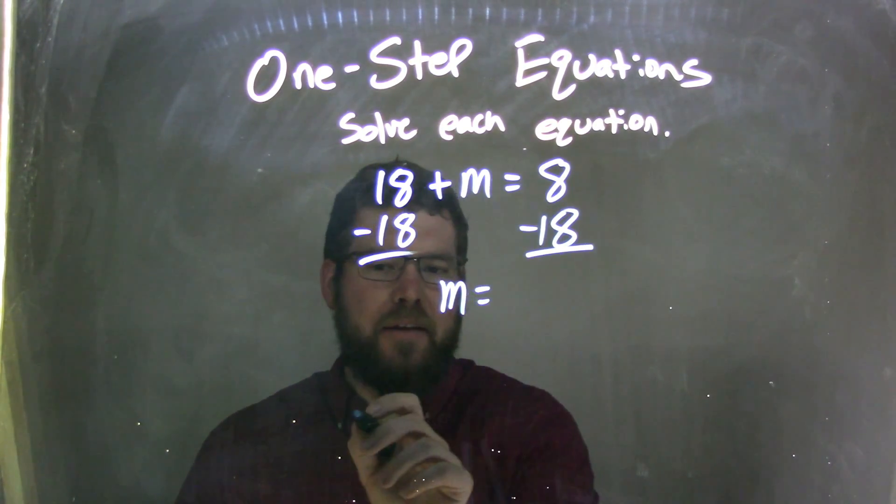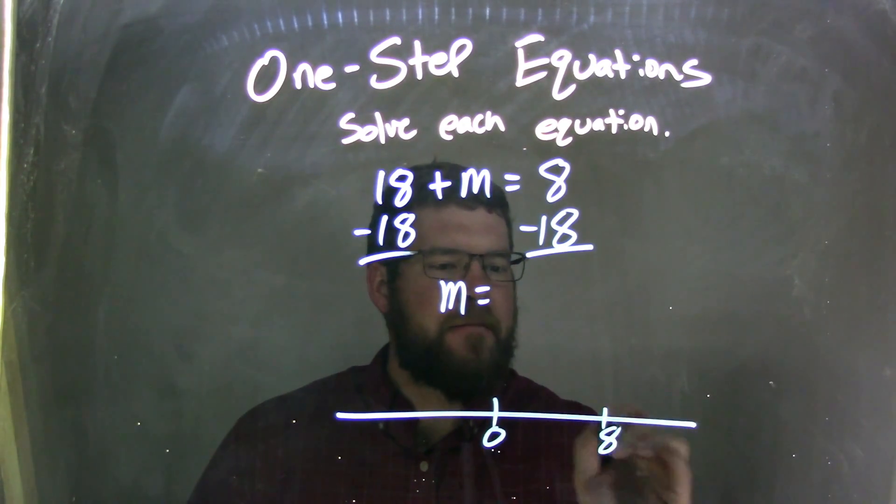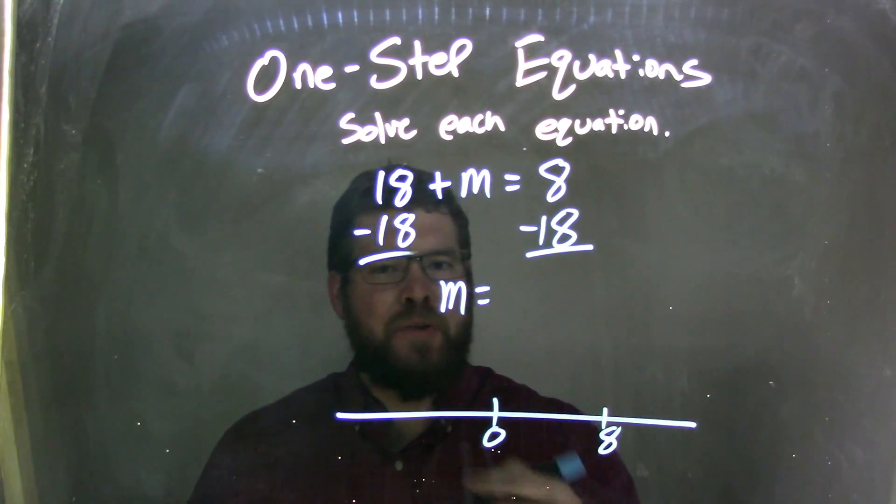Let's use a number line. It's another trick I like to use. So if I have 0 here and an 8 here, okay,